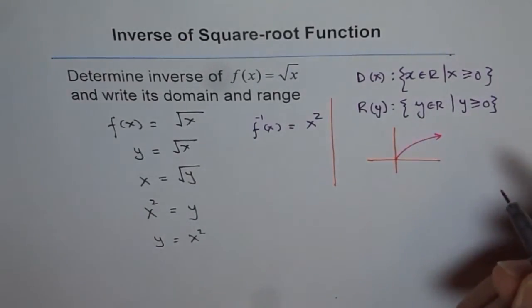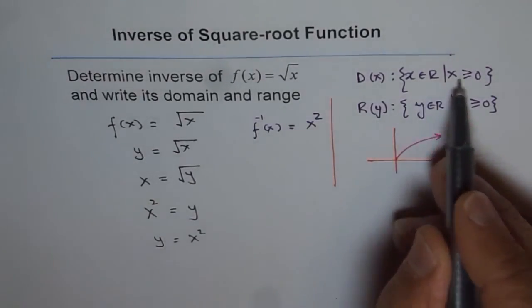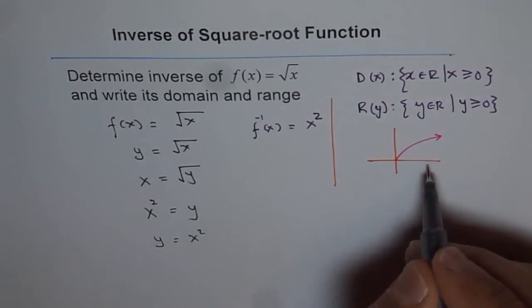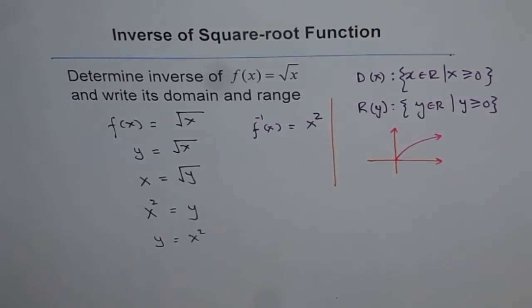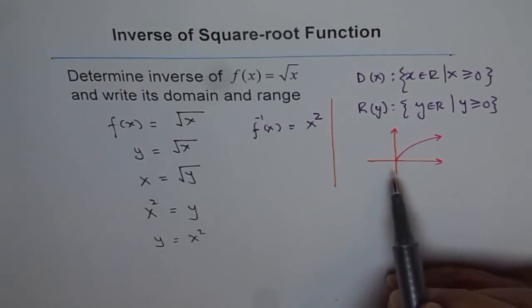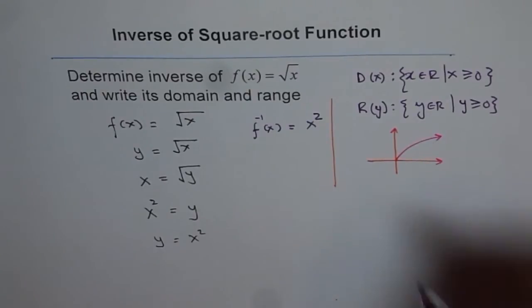Right? And you can see that x is greater than or equal to zero. Right? Along this direction. And y is also going up. Right? It makes sense. So that is perfectly fine. Now, so that is your function which is square root x. Right?